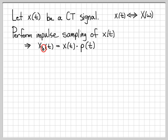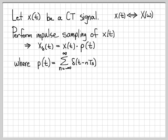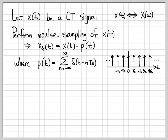We use the subscript delta to indicate this is a continuous time signal that has been impulse sampled — multiplied by p of t. We can write down mathematically what p of t is: it is just an infinite collection of impulses all at multiples of T_s. This infinite summation is what p of t equals, and we can sketch it as just an infinite impulse train.